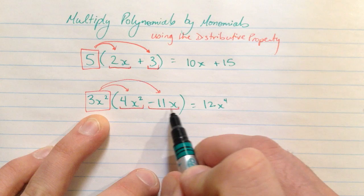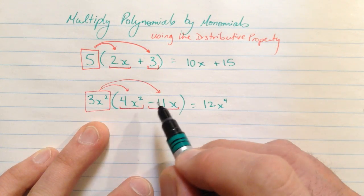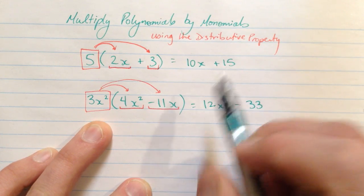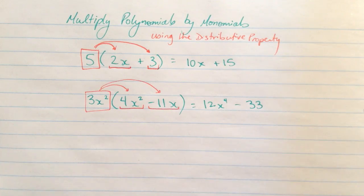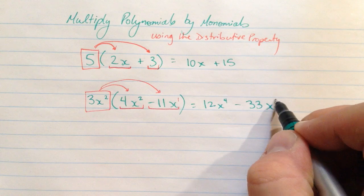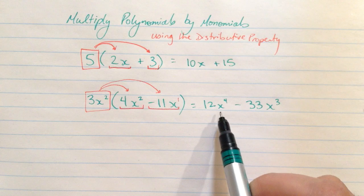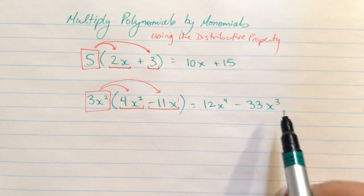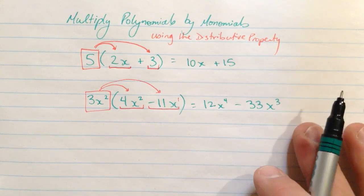Let's do the next one. 3x squared times negative 11x, being careful with that negative sign. 3 times negative 11 is negative 33. And then the variable part, x squared times x. Remember, this is the understood exponent 1, so that's going to be x cubed. Again, this cannot be simplified anymore because we have x to the fourth here, we have x to the third here. Those are different variable components, so they are not like terms and cannot be combined.